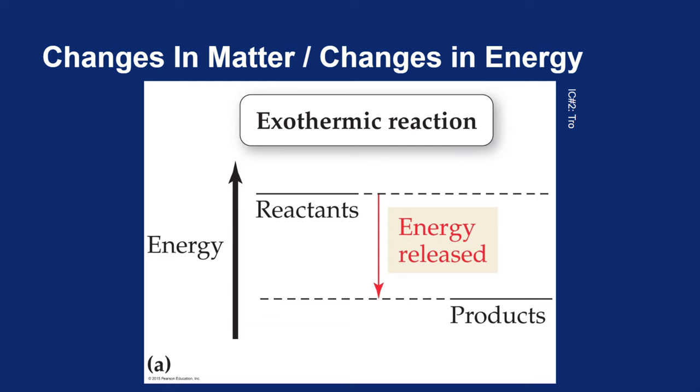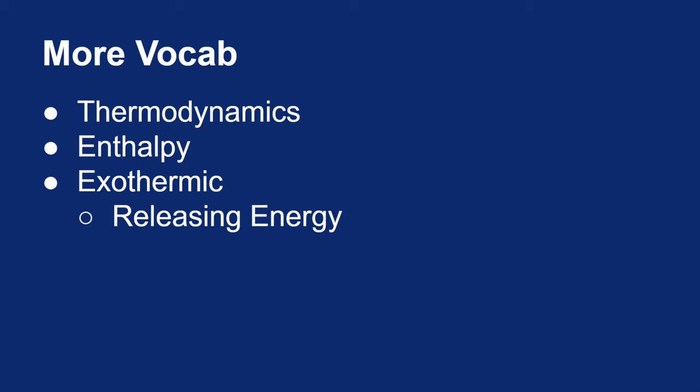Earlier in the year, we drew energy diagrams like this. We said an exothermic reaction was when the energy of the reactants decreased as they turned into products—in other words, energy was released into the environment. A better term for that would be enthalpy. In an exothermic reaction, enthalpy decreases. The amount of energy stored in the reactants is greater than the amount stored in the products. That enthalpy was turned into heat and released into the surroundings. An exothermic reaction releases energy and has a negative change in enthalpy.